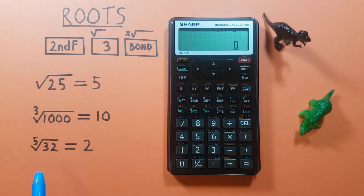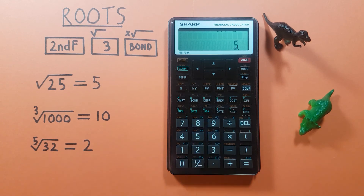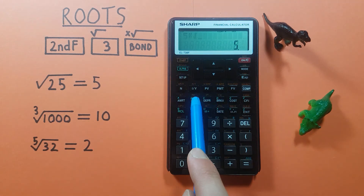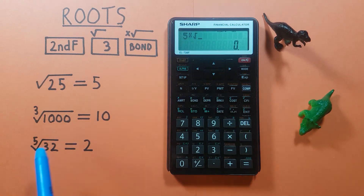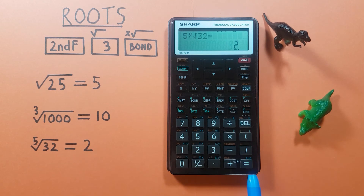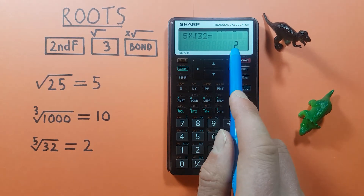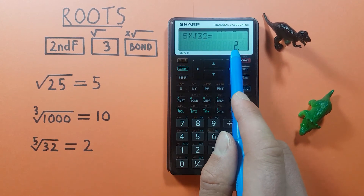Another example — let's find the fifth root of 32. Again, first we enter the root, so that's 5, and then second bond. There we go, x root, and we're finding 32, so 32 equals, and we see we get the fifth root of 32 is equal to 2.